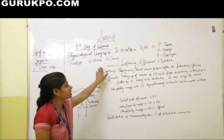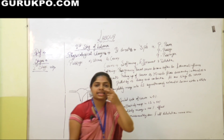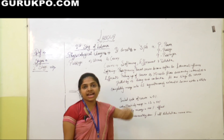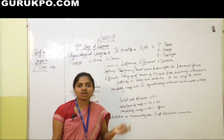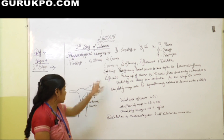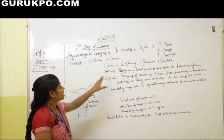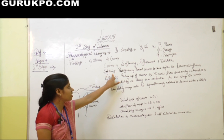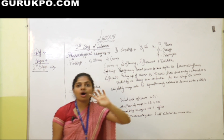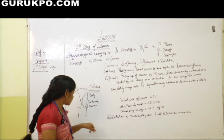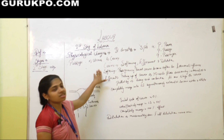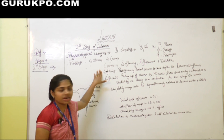In the cervix, there is softening, effacement, and dilatation, which together are known as the ripening of the cervix. In the pregnancy period, the cervix becomes softer because of the influence of hormones. This is known as the softening of the cervix.